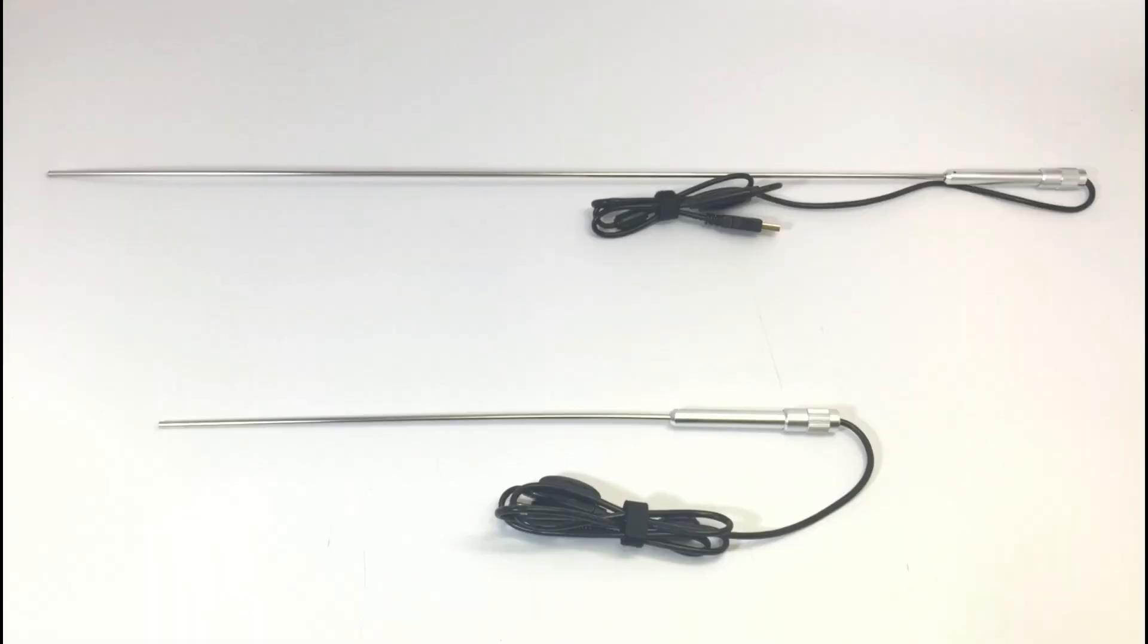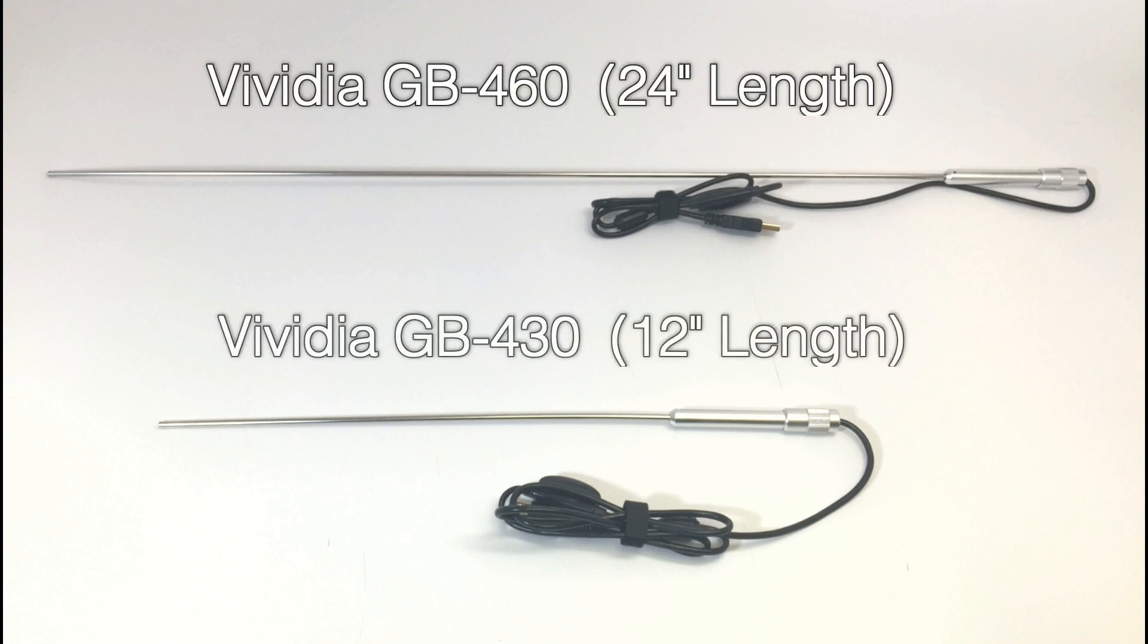The GB Series comes in two different models which differ only in the length of the insertion tube. The GB 460 is 24 inches in length while the GB 430 is 12 inches long.